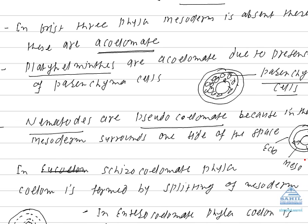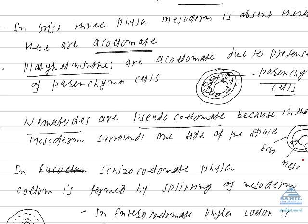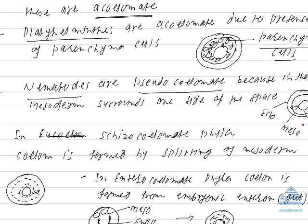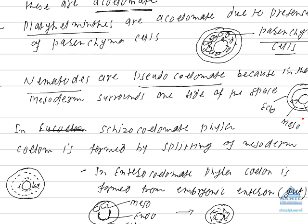Rest of the phyla of animal kingdom, that is Annelida onward, all animal phyla are truly coelomate. And eucoelomate animals are of two types: Schizocoelom and Enterocoelom.